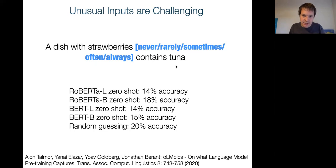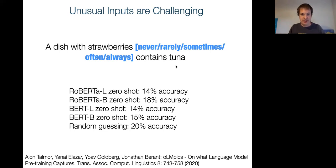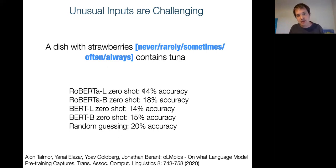It turns out that popular pre-trained language models without fine-tuning actually perform worse than random chance — which is 20% accuracy for five options. These models have certain biases that are counterproductive for common sense reasoning. So they don't capture this kind of common sense knowledge at all. The main reason is that these unusual probe sentences are not the type of sentences that appear in normal text collections, and these models are trained to complete ordinary sentences.